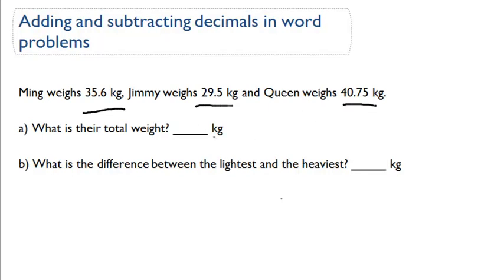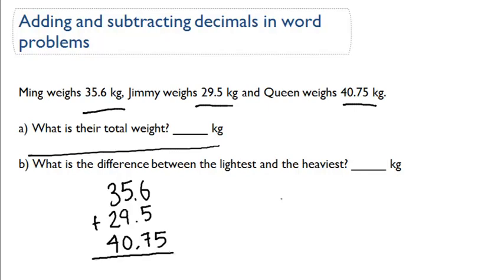The first question asks you, what is their total weight? So what is the weight of all three of these individuals? We have 35.6 plus 29.5 plus 40.75. Okay, we need to add these three up to figure out what the total weight is.